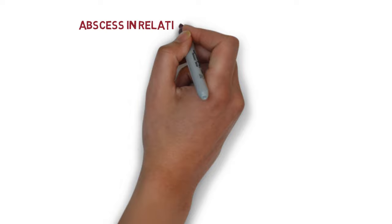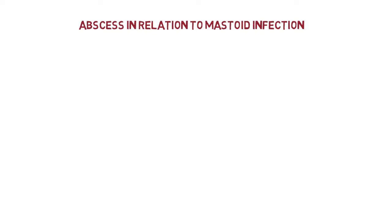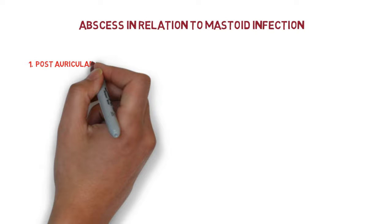We are going to study about abscesses in relation to mastoid infections. There are six types of abscesses that may be formed by mastoid infections. The first one is post-auricular abscess.